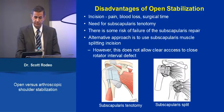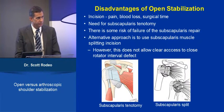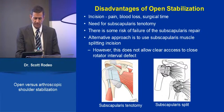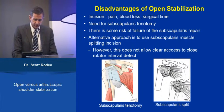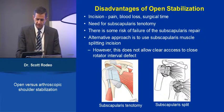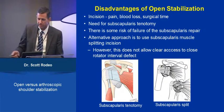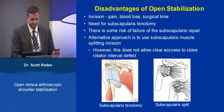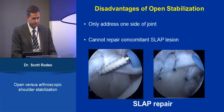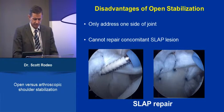What are some disadvantages of the open approach? Certainly it requires incision, with associated pain, blood loss, and more surgical time. Often we use a subscapularis tenotomy, and there is some risk of failure of the subscapularis repair — uncommon, but it can happen. An alternative is a subscapularis muscle-splitting incision; however, this does not allow clear access to close a rotator interval defect. The open approach also cannot repair concomitant superior labral lesions.